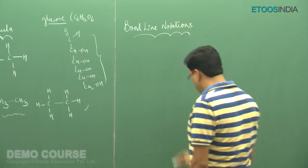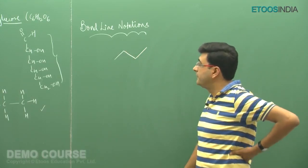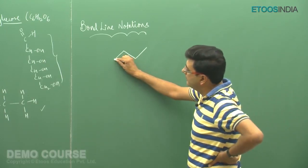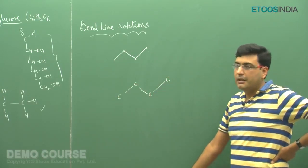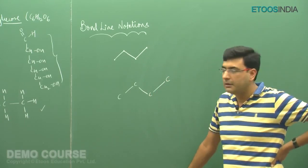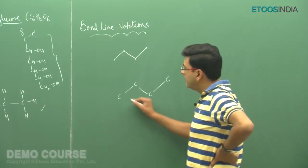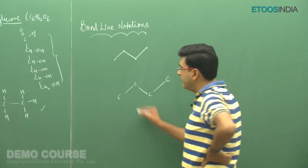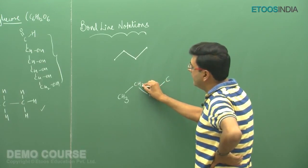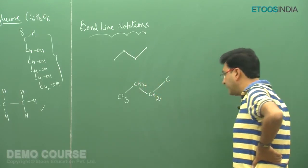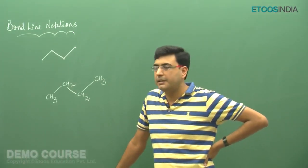In bond line notation, we do not explicitly represent carbon and hydrogen atoms. For example, a zigzag line representation — every corner denotes a carbon atom. There are 4 carbon atoms because 4 corners are present. The remaining valences not shown in the bond line notation are completed with hydrogen atoms. A terminal carbon connected to 1 other carbon has 3 remaining valences filled by hydrogen, and an internal carbon connected to 2 carbons has 2 remaining valences filled by hydrogen.